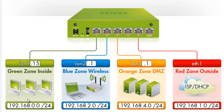The green zone will be for all users on our local area network. We'll also set up a blue zone for our wireless users that will connect to a wireless access point or wireless router, which connects to the Endian Firewall device. We're also going to set up an orange zone for our DMZ — for any servers we want publicly available from the internet, like a web server or mail server. And we're going to need a red zone, which is the WAN side — the outside, insecure side of the network that gives us our public IP address from our internet service provider.